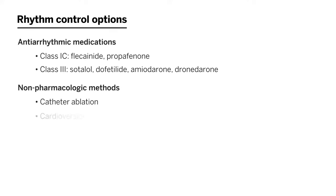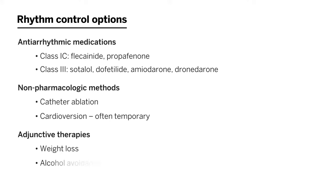Cardioversion is also a non-pharmacologic way of controlling rhythm, and there are adjunctive therapies to improving rhythm control, including weight loss, alcohol avoidance, and sleep apnea treatment. Sometimes all of these are needed for rhythm control, or a combination of these options.